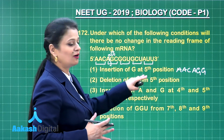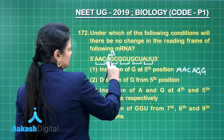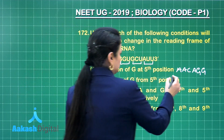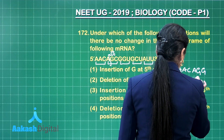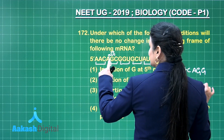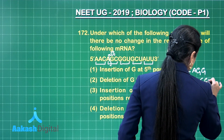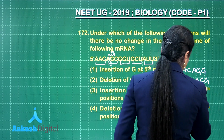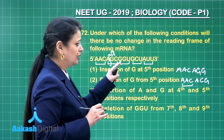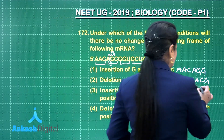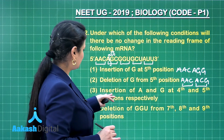Option two: deletion of G from the fifth position. If this G is deleted, the messenger RNA now reads: first codon AAC, then the second codon becomes ACG — not AGC. So the frame has been changed; it is now ACG.